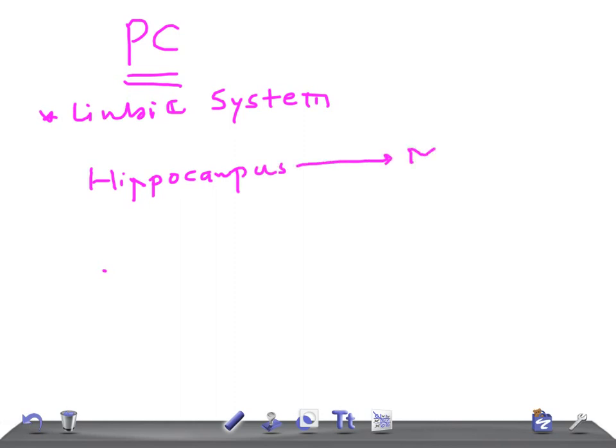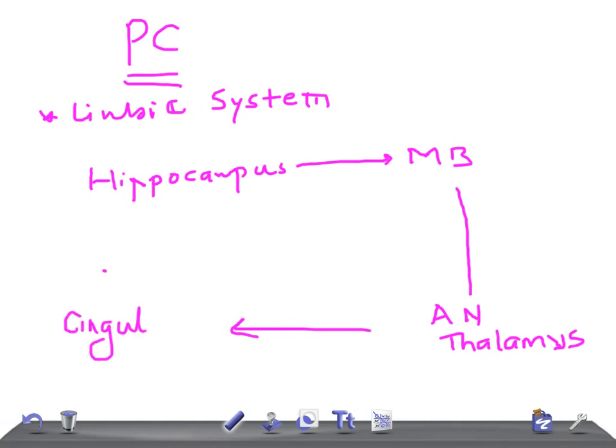Mammillary body, then we have anterior nucleus of thalamus, then we have cingulate gyrus. So this circuit is known as Pappers circuit. The hippocampus is connected with the mammillary bodies.